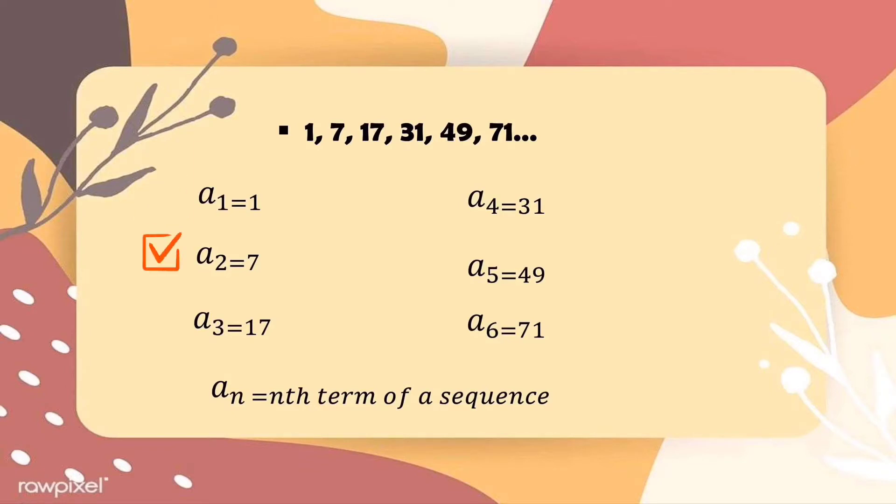Next is 17, which is our third term. We denote this as a sub 3. And then a sub 4 is equals to 31. And our fifth term a sub 5 is equals to 49. And last is a sub 6 is equals to 71, which is our sixth term. So we call a sub n the nth term of a sequence.